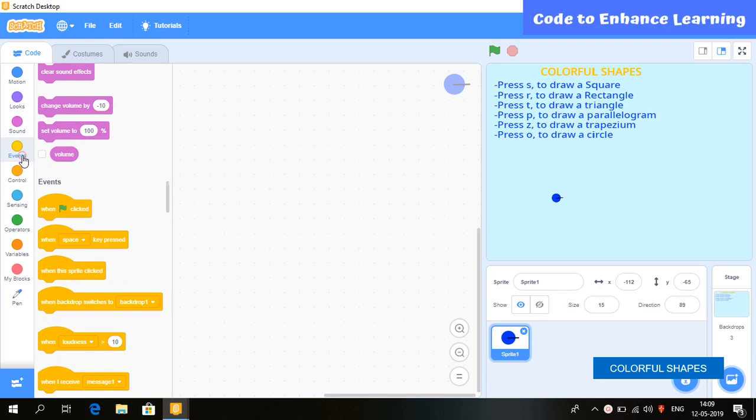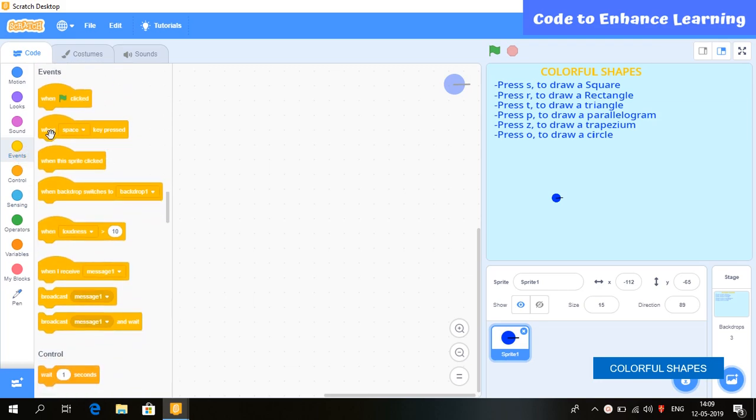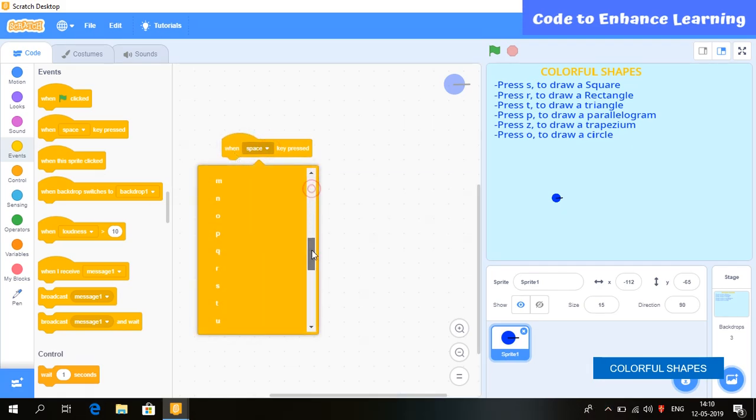First of all, we are going to select an event. We will select this one. In this event, whenever we press one of these symbols, the code written below produces an output.